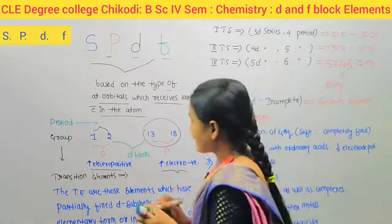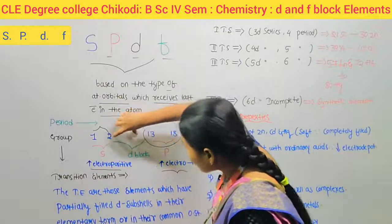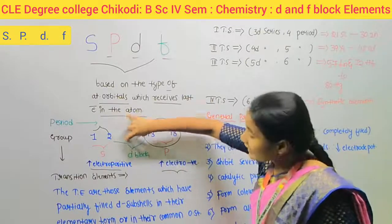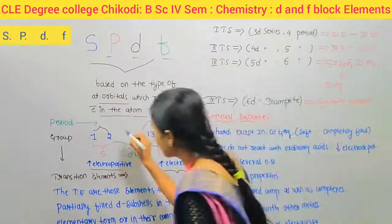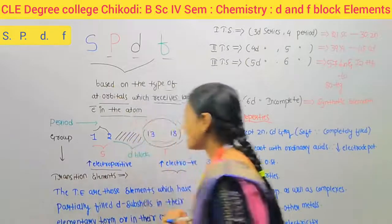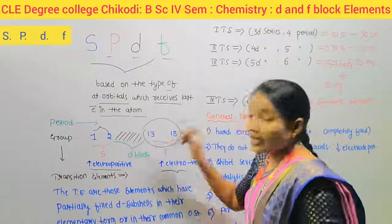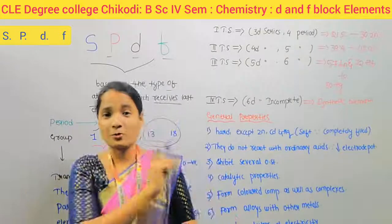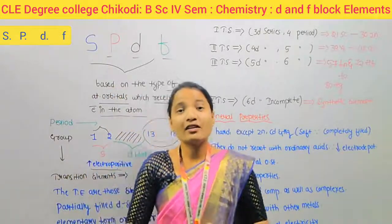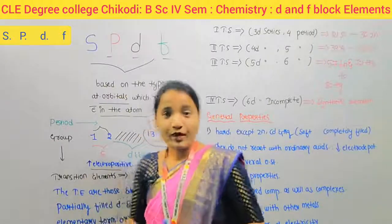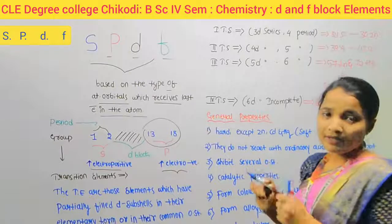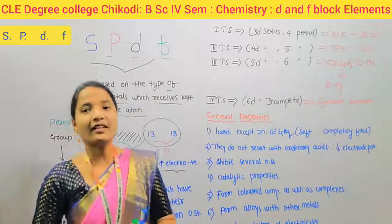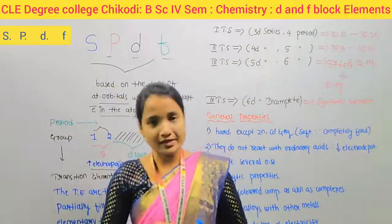There is a gap between group 2 and group 13 in the periodic table. This gap indicates D-block elements. D-block means the last electrons enter into the D-subshells. These are also called transition elements.